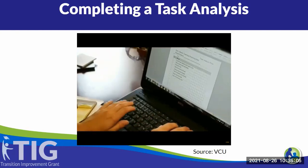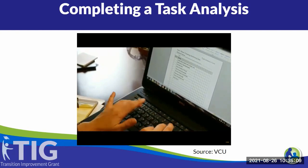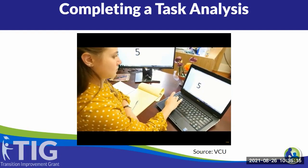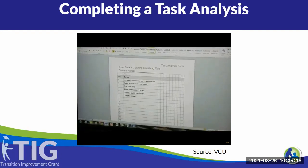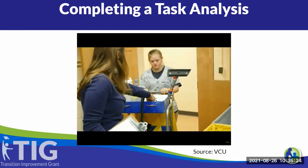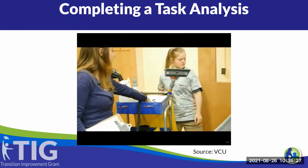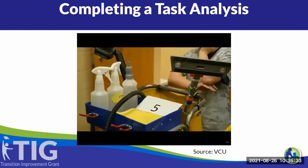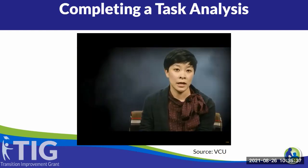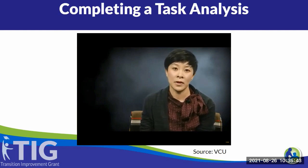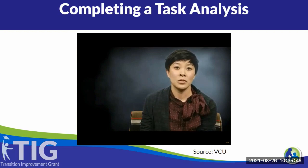Each step should be comprised of a single observable behavior and assigned a verbal cue, so that if a verbal prompt is given, it will be the same prompt no matter who is using the task analysis. Steps are ordered in the sequence in which they will be taught, and natural supports and strategies should be built into the TA. For example, if a student uses a visual support — such as a reminder for the number of towels needed — the TA should include a verbal cue to use this visual, written as 'check your sign for the correct number of towels' rather than 'get correct number of towels (five).'